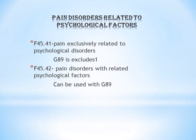For F45.41, the code G89 is Excludes 1. G89 describes acute or chronic pain and is applicable for physical pain only. Since F45.41 does not involve physical pain, G89 is Excludes 1 for F45.41. Excludes 1 means the two codes should never come together — so F45.41 and G89 should never be coded together.